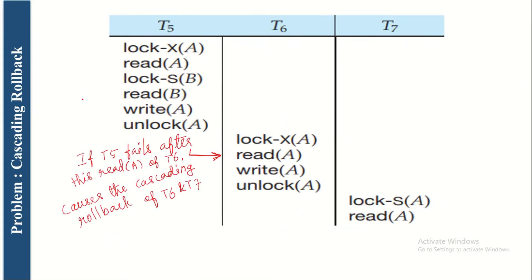Now let us discuss a problem called cascading rollback, which is not resolved by the normal two-phase locking protocol. In this example, three transactions T5, T6, and T7 all follow the two-phase locking protocol — T5 acquires all its locks in the growing phase and releases them in the shrinking phase, and the same applies to the others.